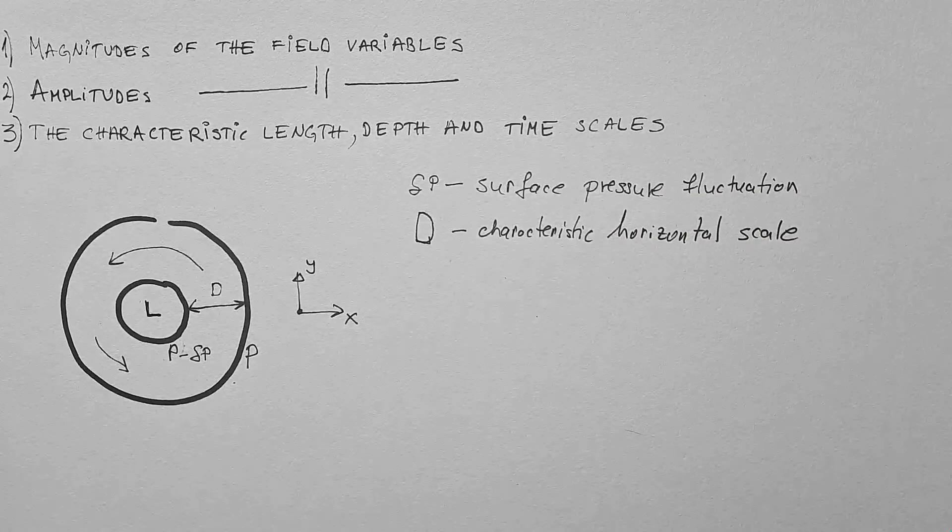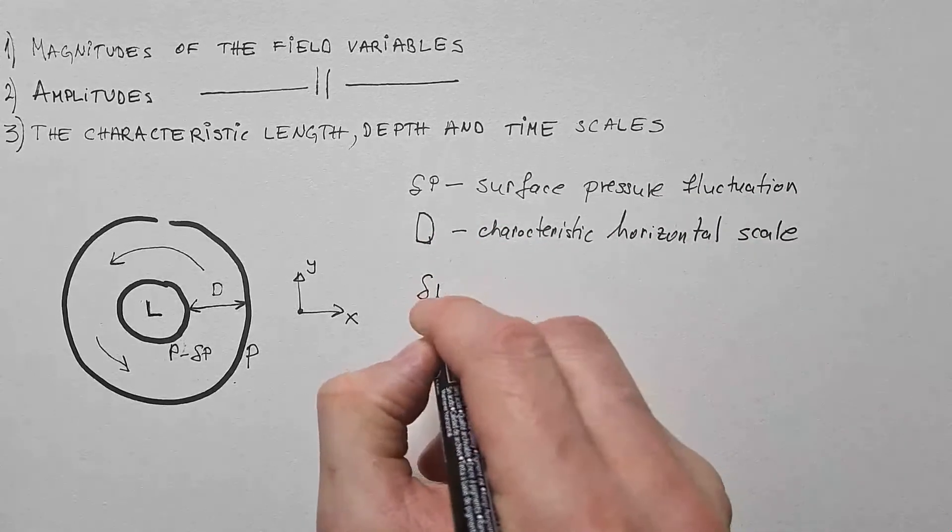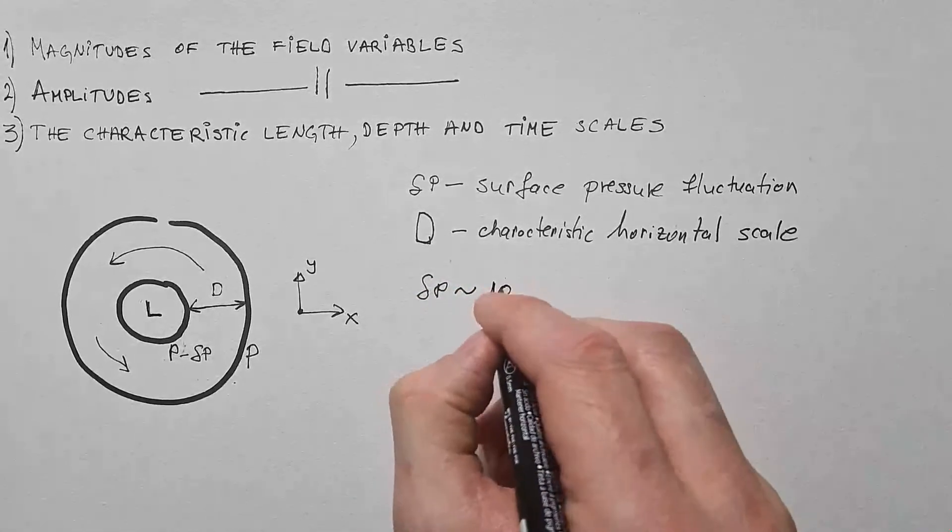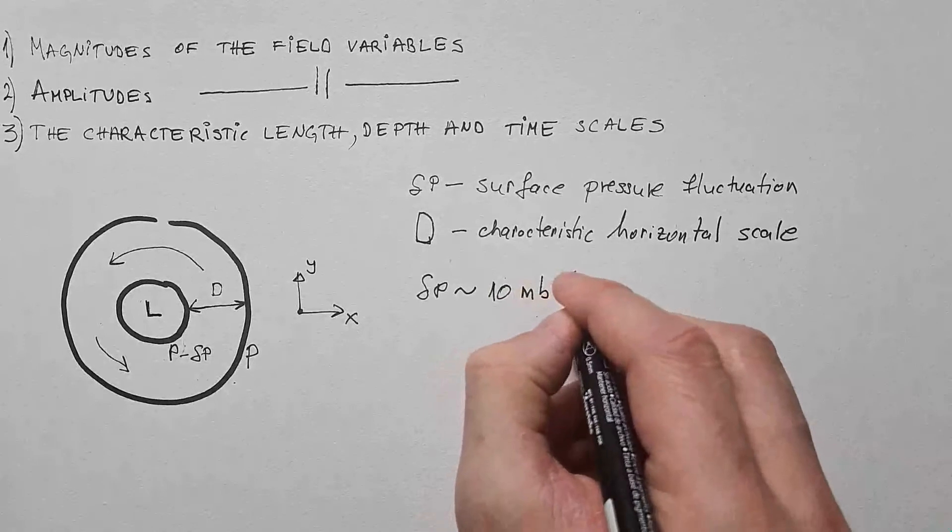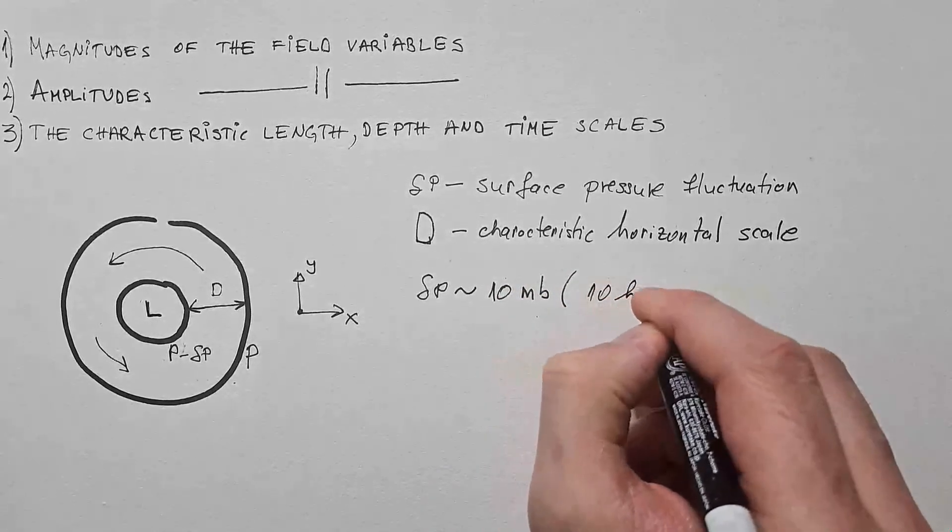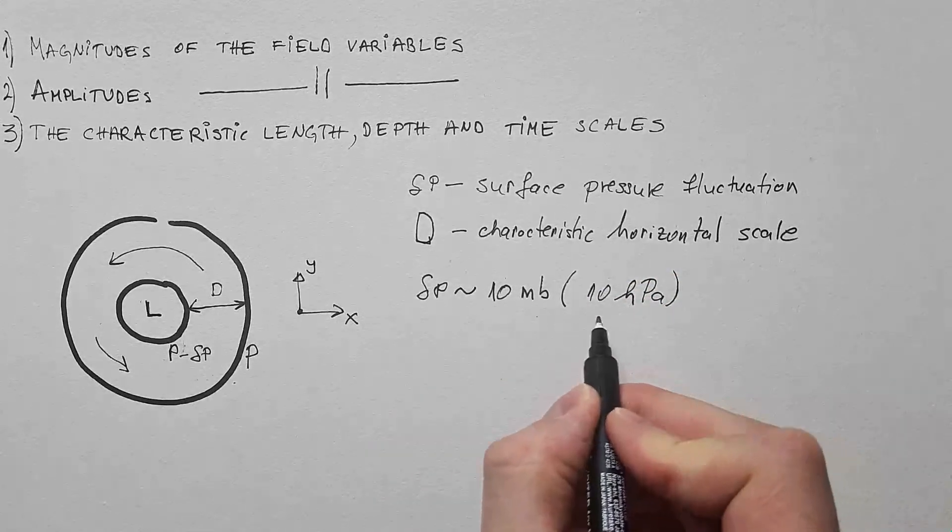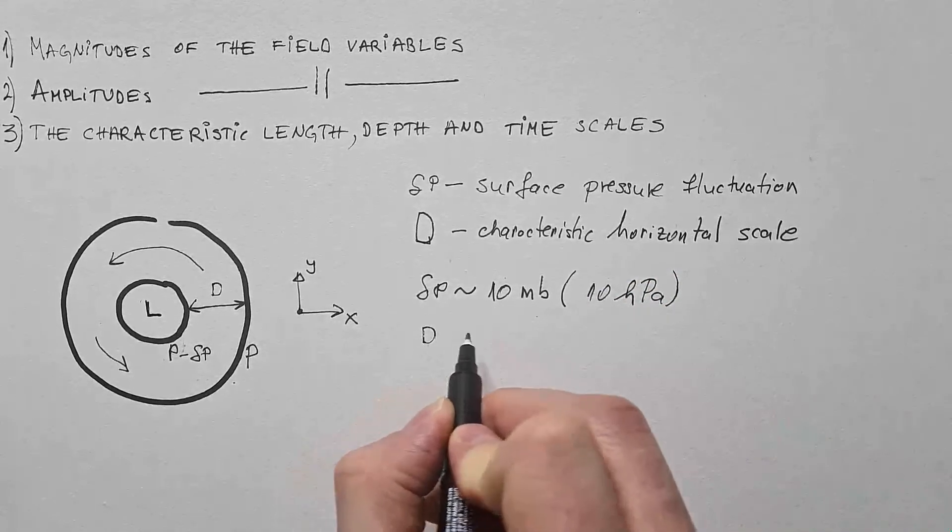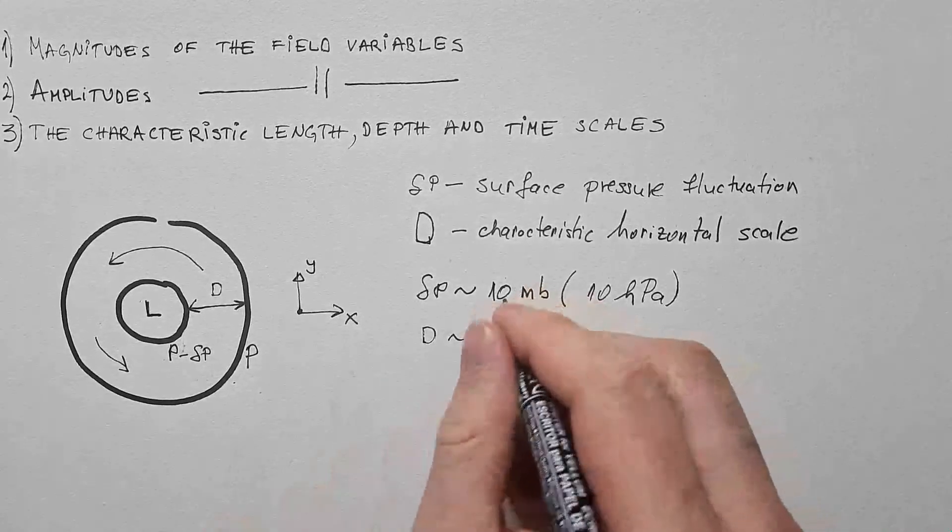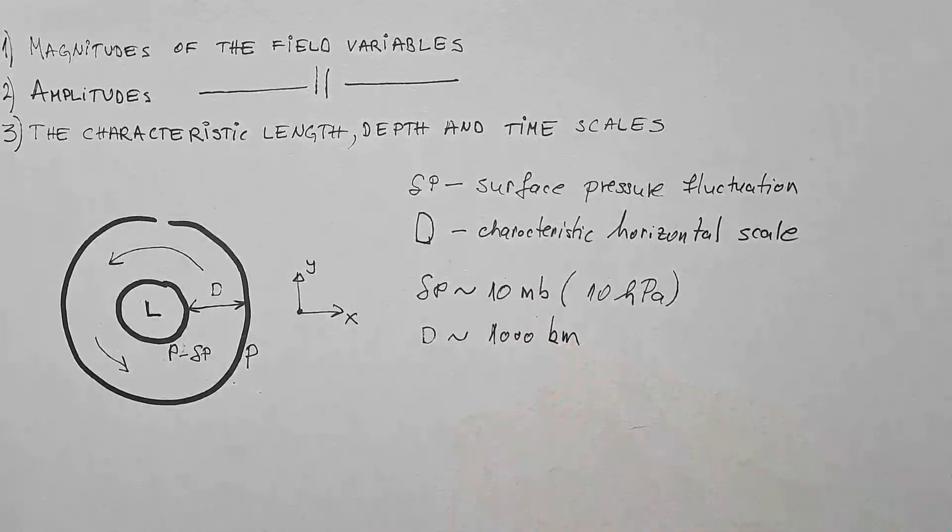Now, in middle latitudes, typical values of delta P are of the order of 10 millibars, which is also 10 hectopascals if you want SI units. And this happens over the characteristic horizontal scale of 1000 kilometers.